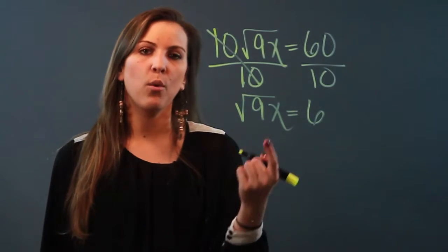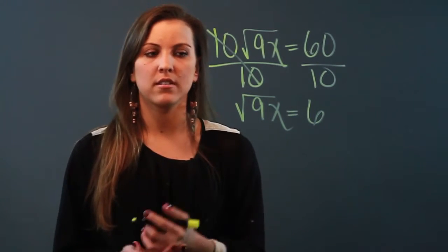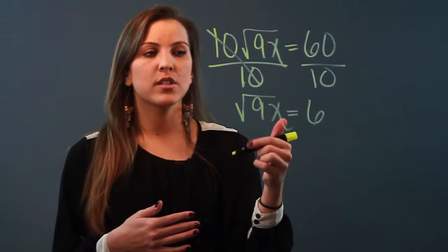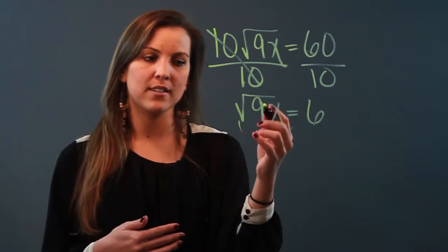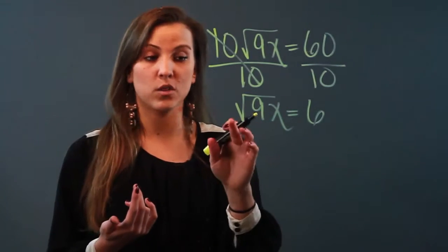Now that the square root is alone you always use inverse operations to get the variable alone. So you have to think about what the inverse of square rooting is and the inverse is squaring something.